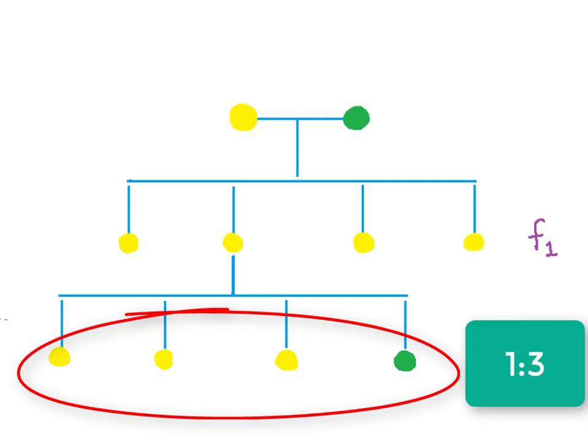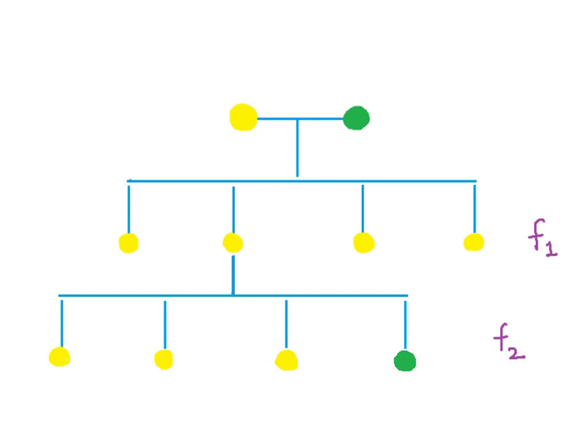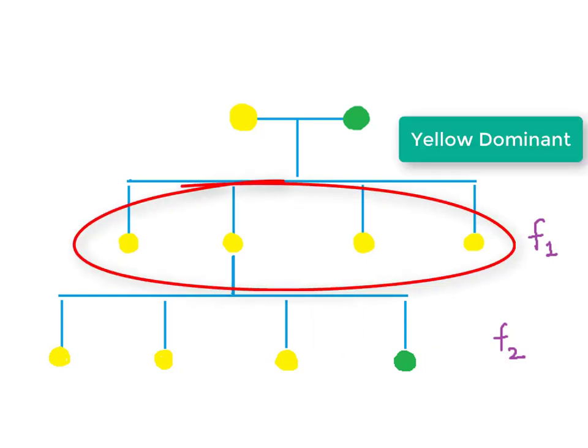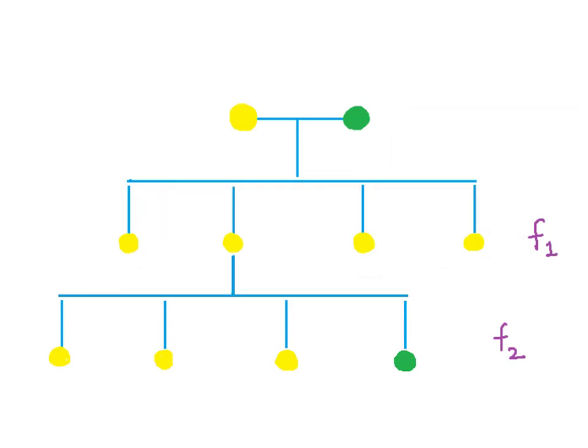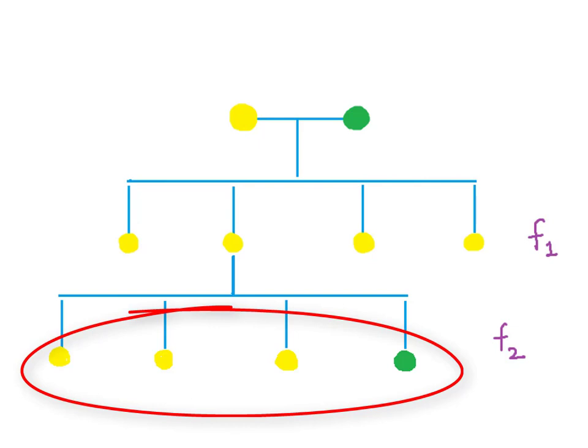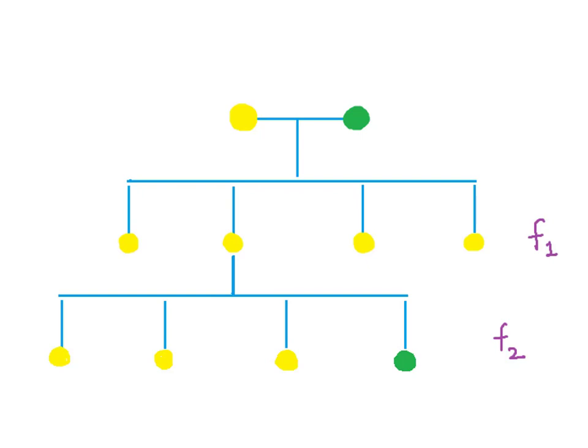Now this could only have happened if both yellow and green traits were present in all the plants of the first generation, but only yellow showed up being dominant. However, in the second generation, one fourth of the plant got the recessive green trait from both the parents, thereby producing green peas. He saw similar behavior for the other six traits also.